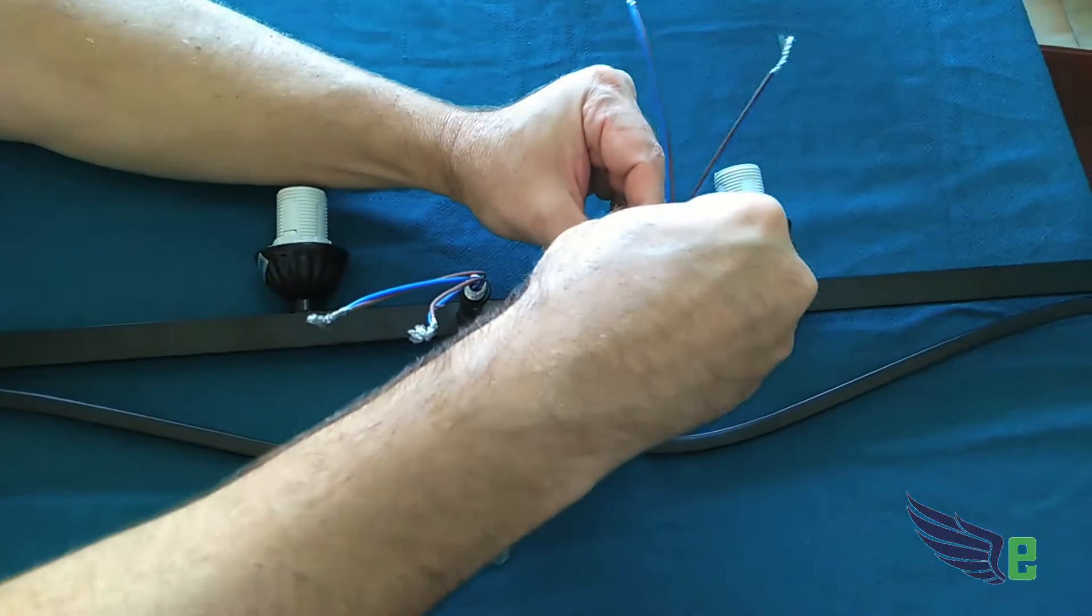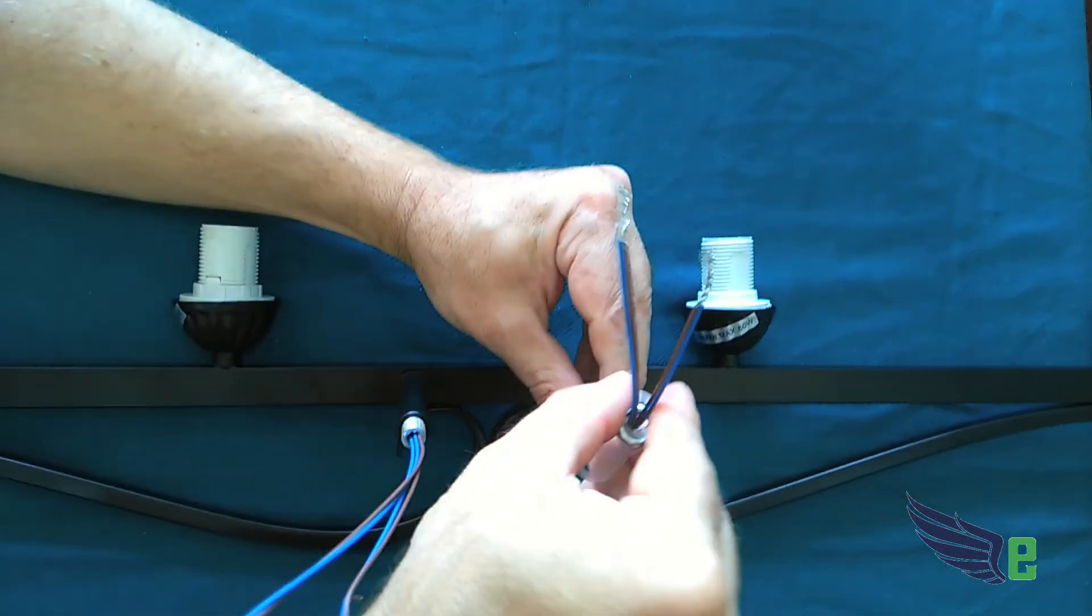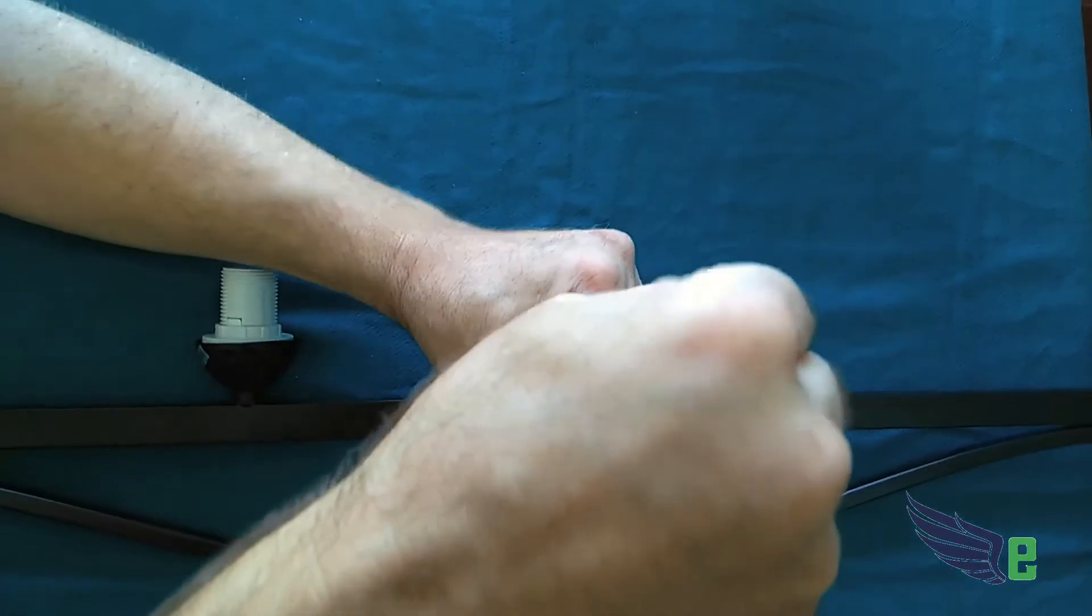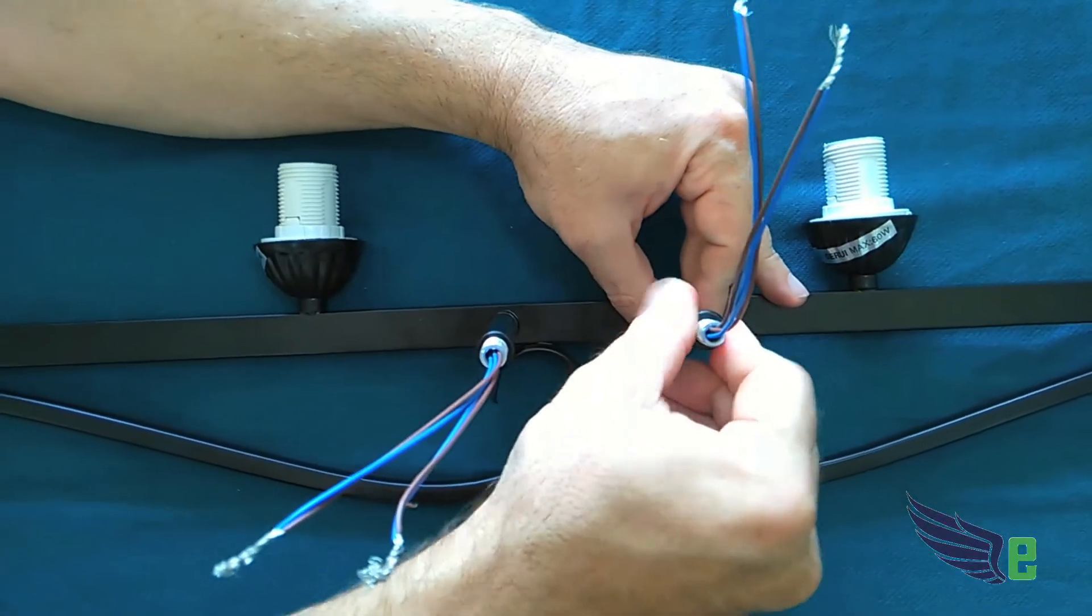Do the same thing here. And this one already has the little lock washer in place there.